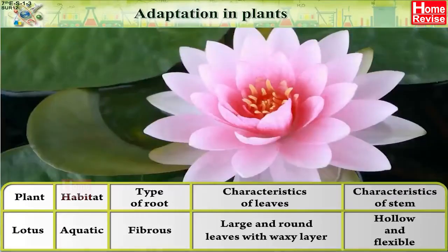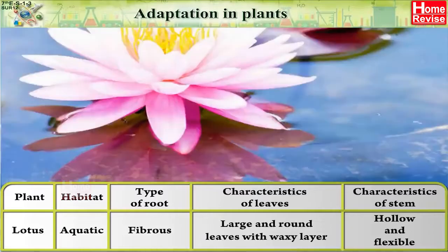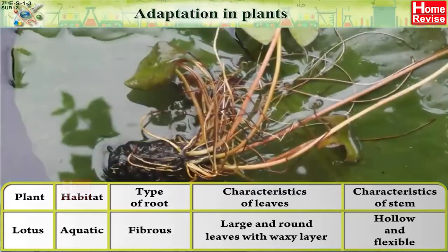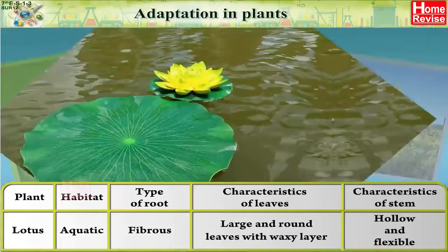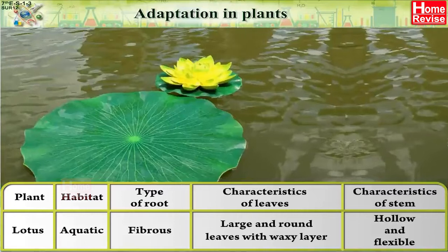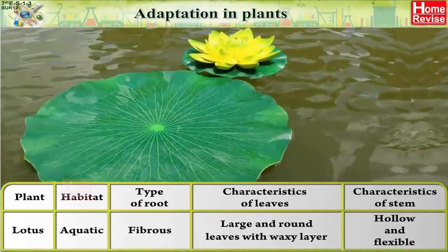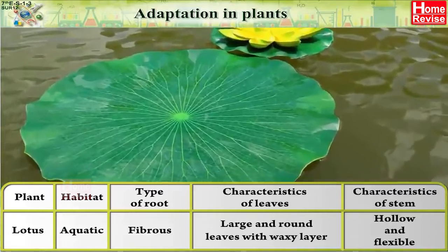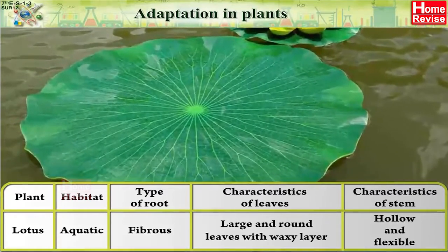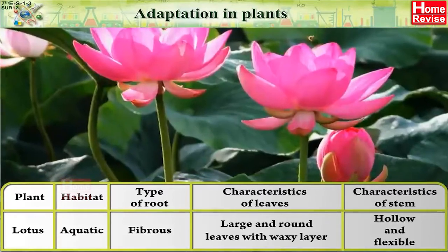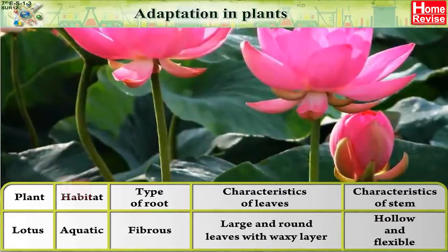Lotus: its habitat is aquatic, type of root is fibrous, it has large and round leaves with a waxy surface, and its stem is hollow and flexible.